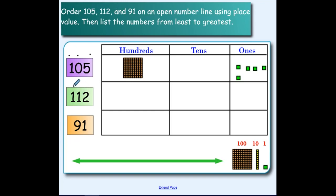112 has three digits. We're going to represent one hundred using one flat, and one ten has the same value as one rod. We're going to represent two ones using two cubes: one, two.